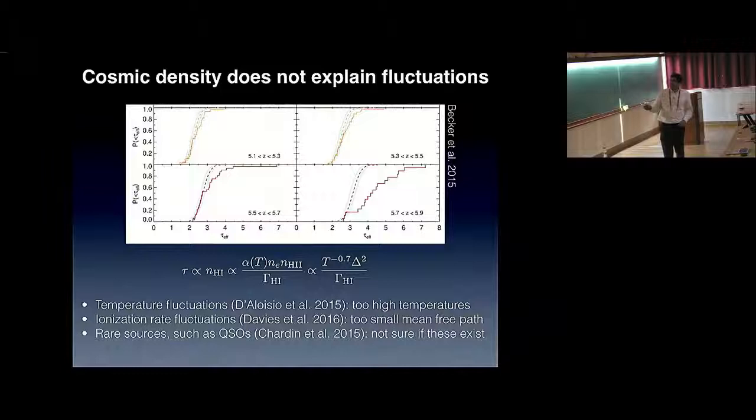This plot illustrates this. What is shown here is the same result in a different way in four redshift bins. What has been plotted is the cumulative distribution function of the same quantity, this effective Lyman-alpha opacity, where the jagged lines are the data. You see this spread apart—that's the scatter we're talking about, particularly at high redshift. These dashed lines with a shaded region are what you expect from density fluctuations alone, and there's no way you can explain these high tau effective values using density fluctuations.